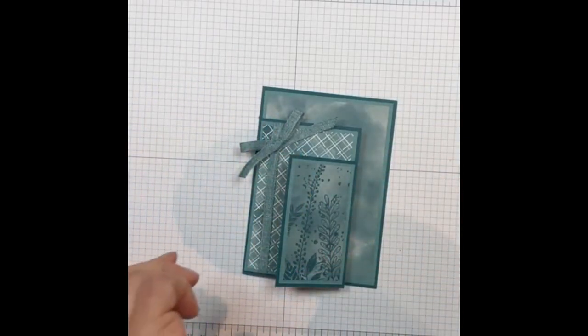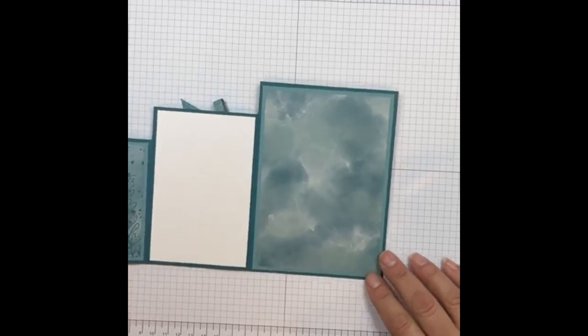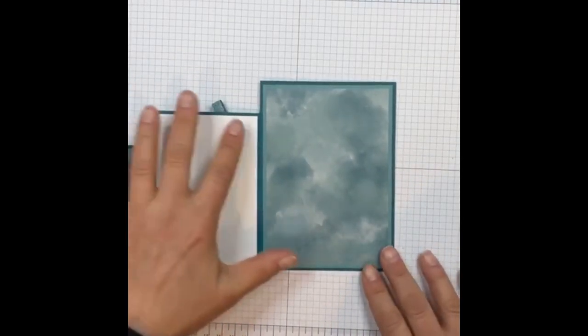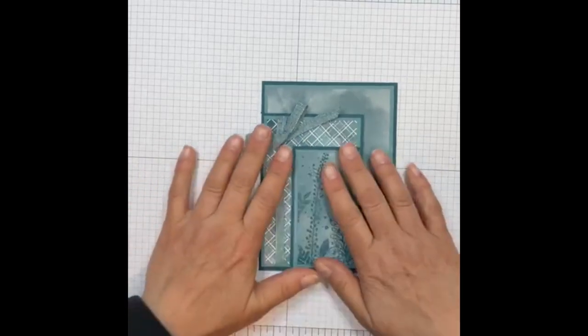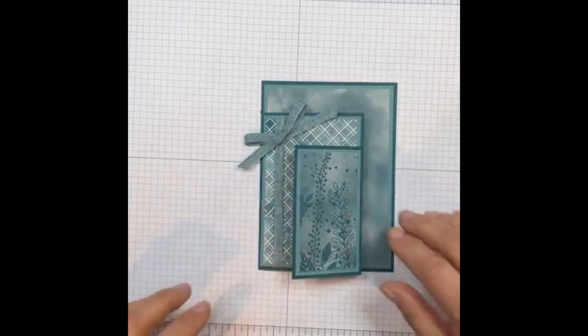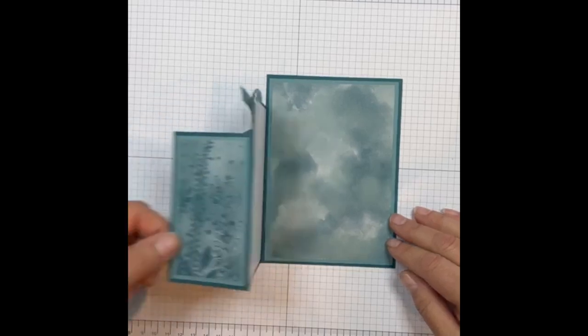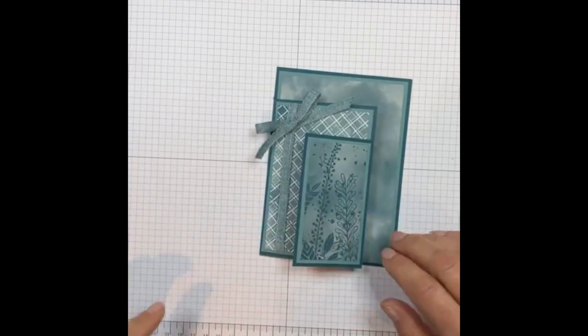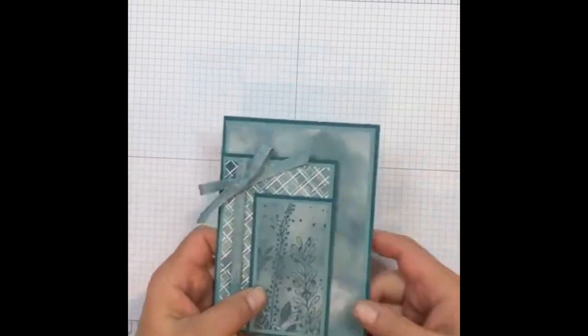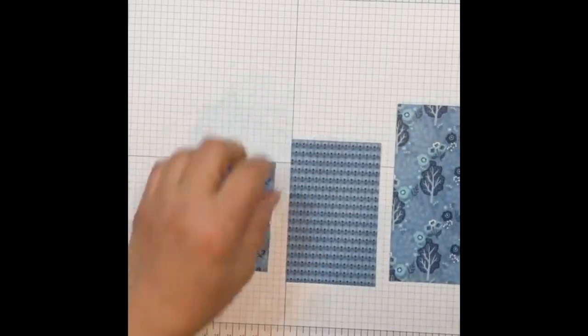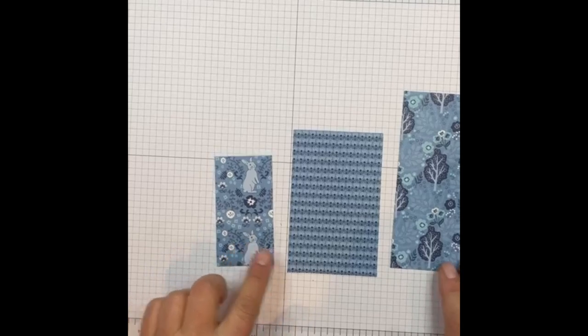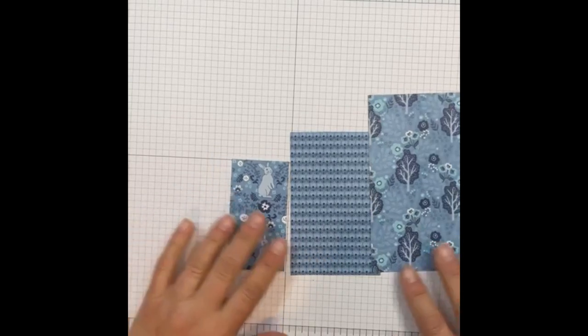So this fun fold shows off your designer series paper, or you can do whatever you want there. Then you've got a spot for a message and you can fancy all of this up however you want by adding more stamped images. But I just wanted to do this one as a model proof of concept to make sure that I could actually follow directions this morning. I'm just using the designer series paper, this one's Hello Irresistible, but the one that we're gonna make together is using Countryside Inn.